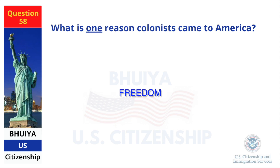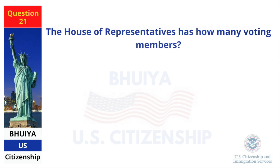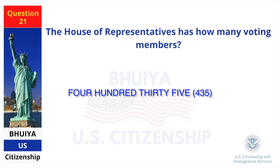The House of Representatives has how many voting members? 435.